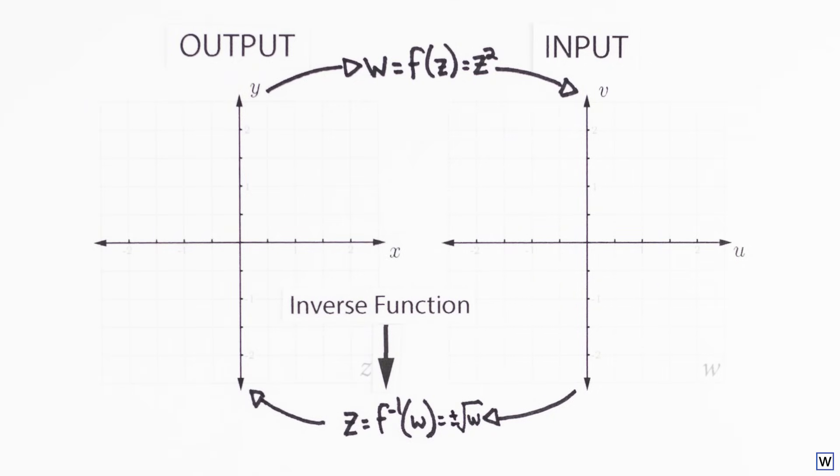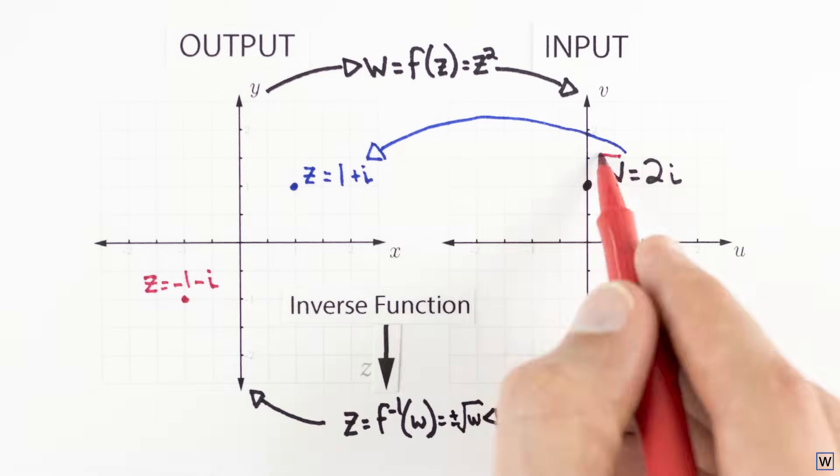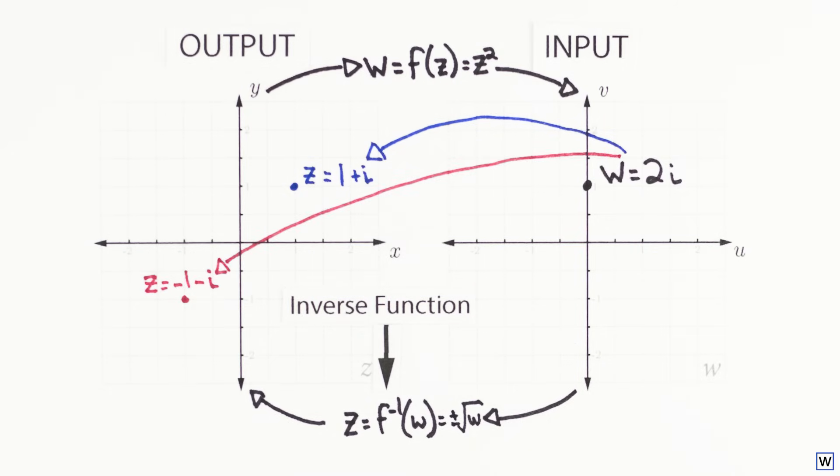We now run into the real math problem. Our inverse function represents the same exact connections as our forward function, just in the opposite direction. So our two inputs that map to the same output are now a single input that maps to two outputs. The w value of 2i maps to both z = 1+i and z = -1-i. This mapping from a single input to multiple outputs is a big enough problem that our function's inverse is not technically even considered a function. The definition of a function requires that each input be mapped to one and only one output.